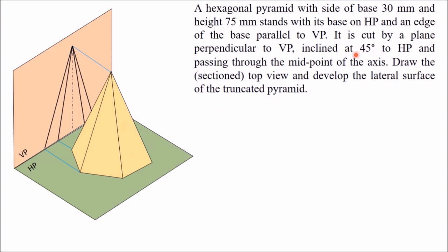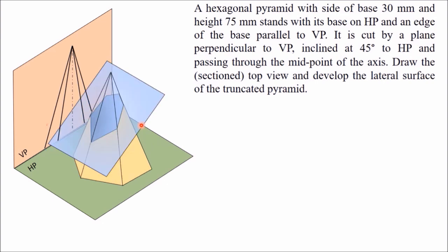After drawing the front view and top view, you have to cut the pyramid by a plane perpendicular to VP. Since the plane is perpendicular to VP, it will appear as a line in the front view. This line is inclined at 45 degrees to the HP, and it passes through the midpoint of the axis.